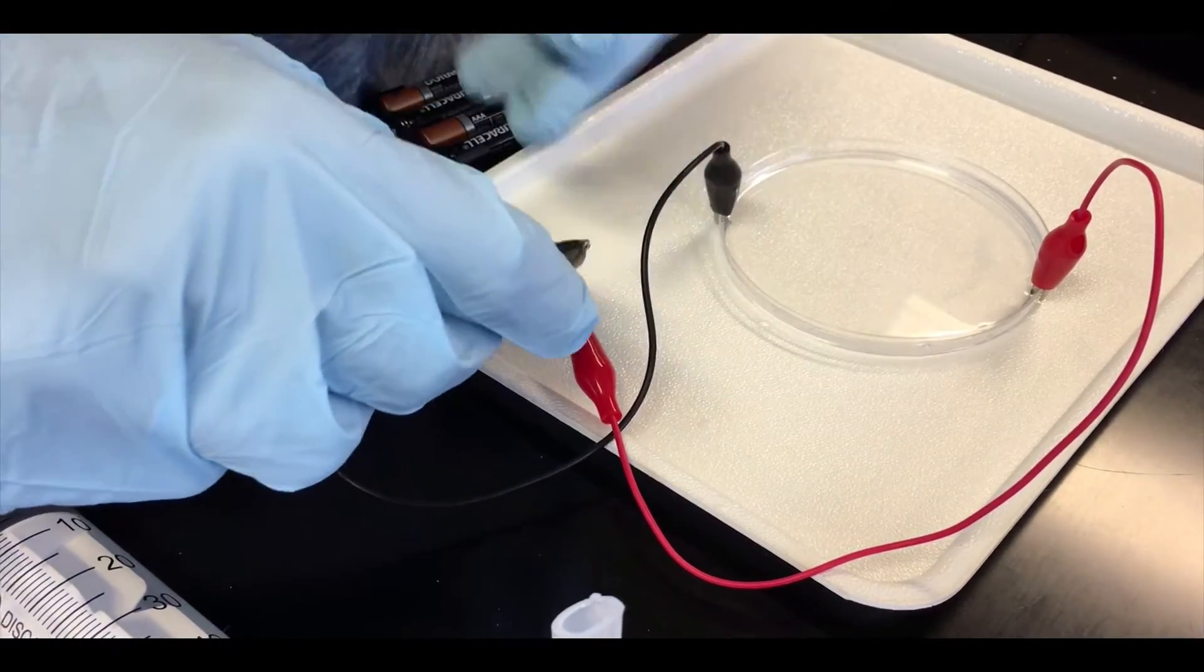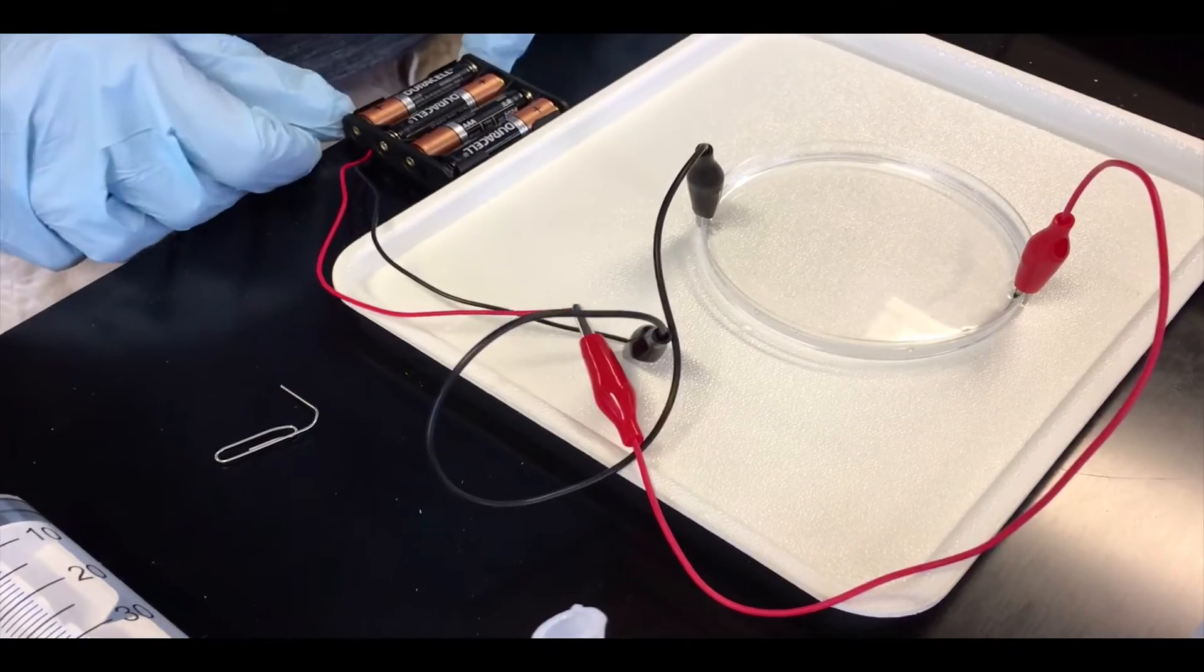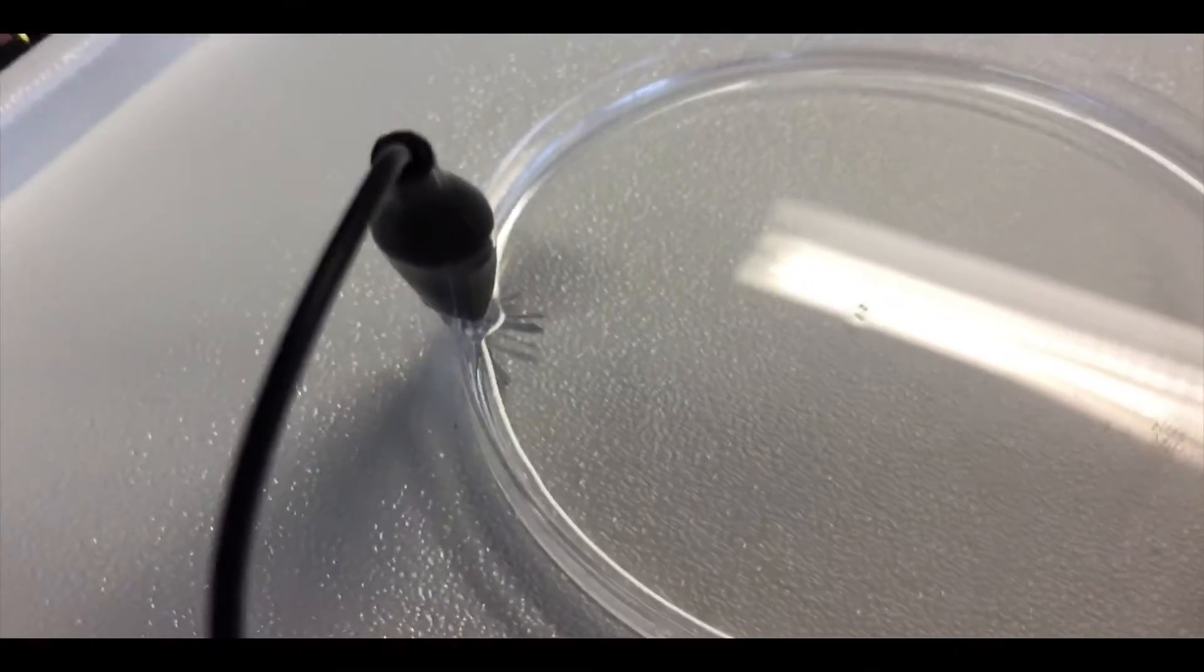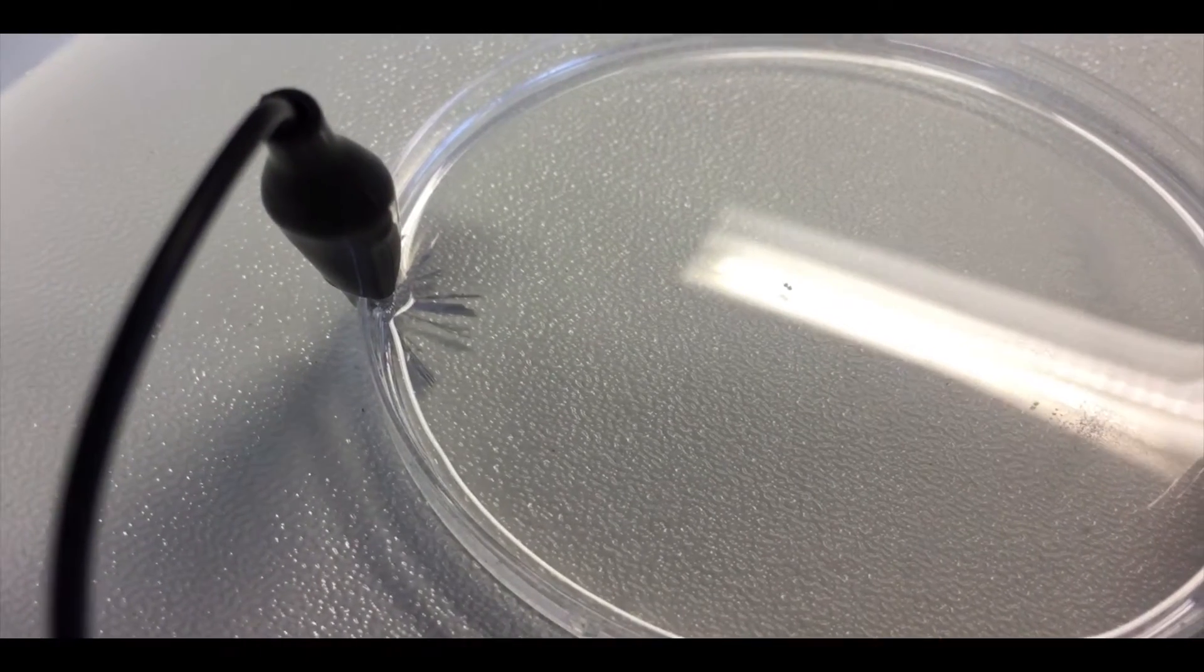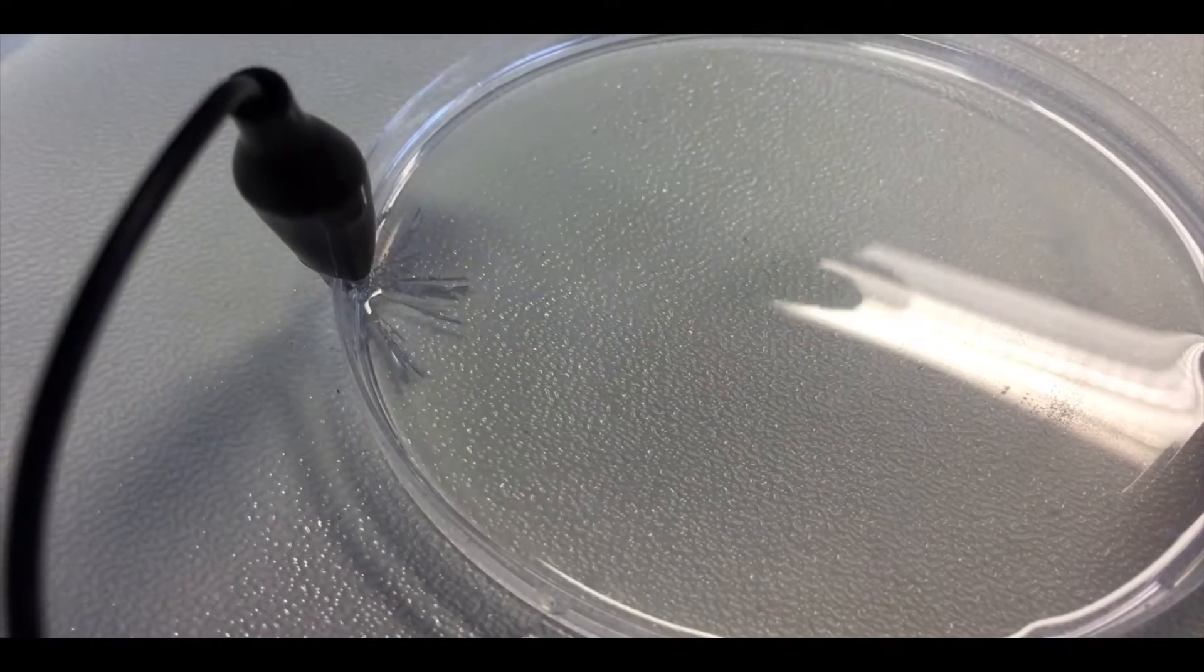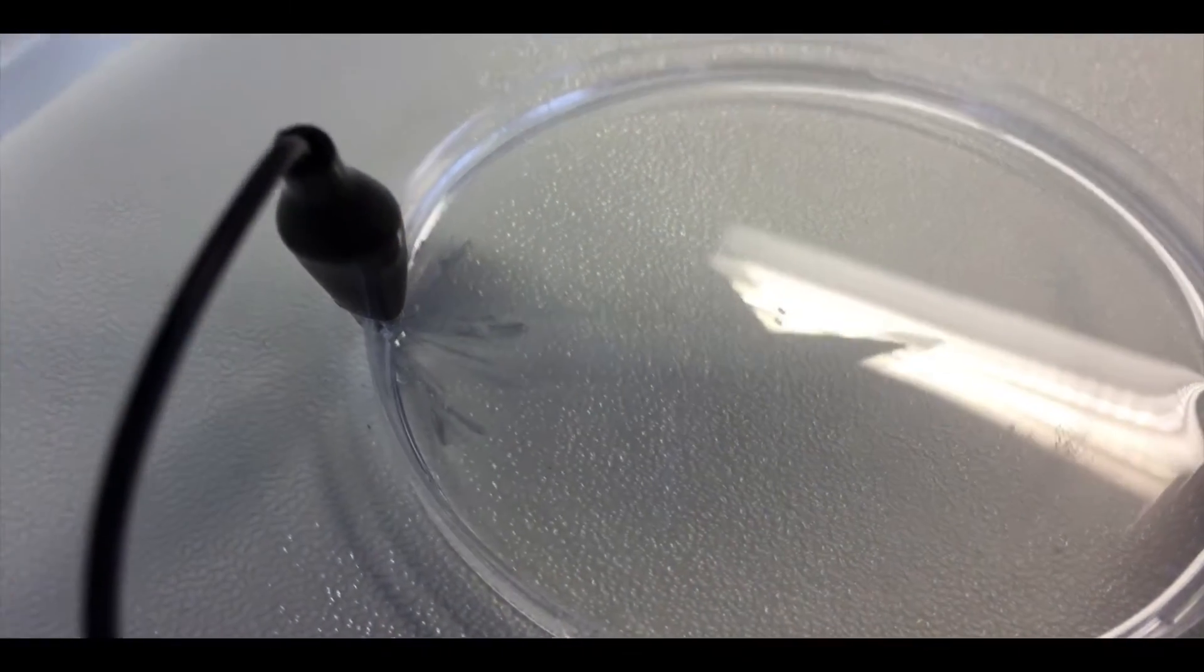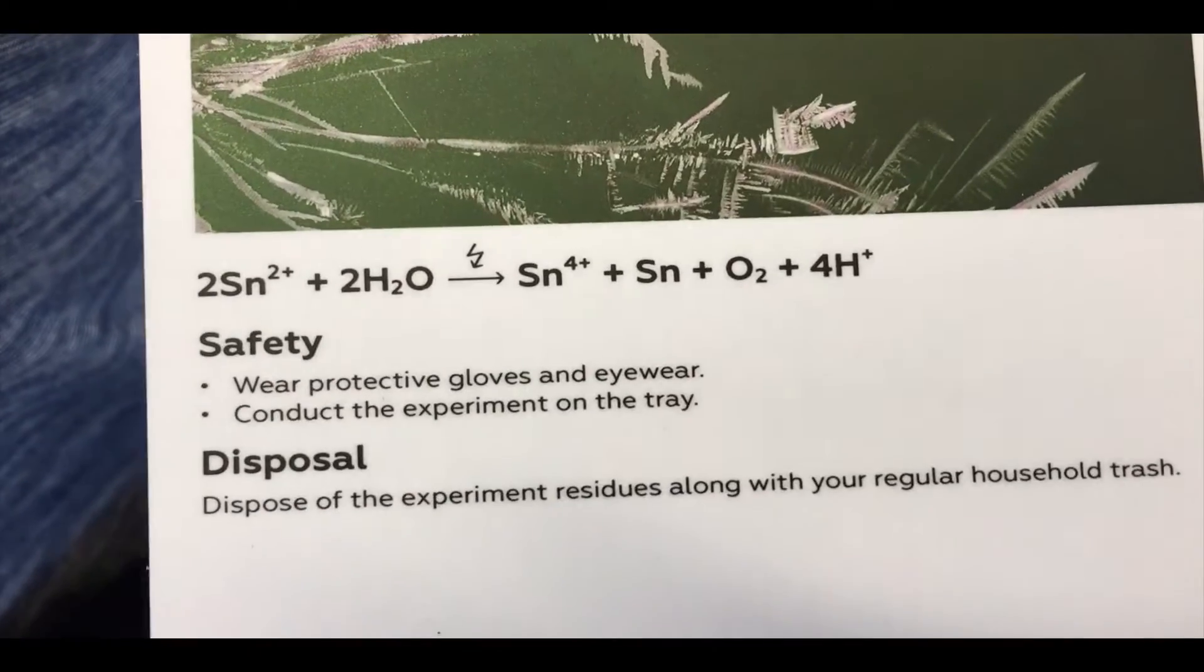The electrons are going to come out of the black lead, so we should see tin growing. Do you see it? Yep, there's already tin growing from that lead. Essentially electrons are coming out of there and they are reducing the tin-2 that's in there to tin metal. Here's the reaction if you want to share that.